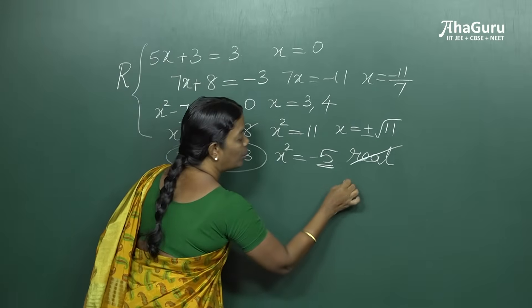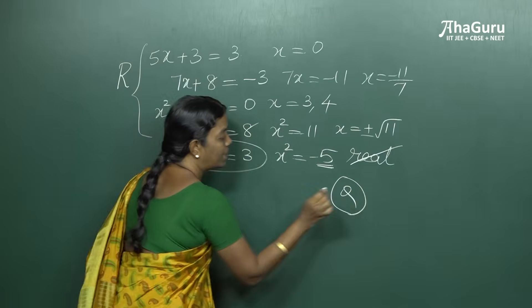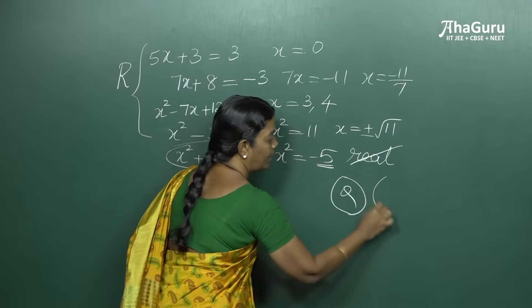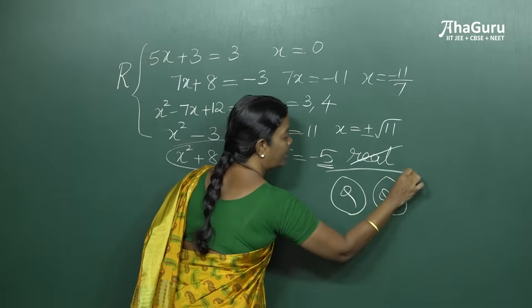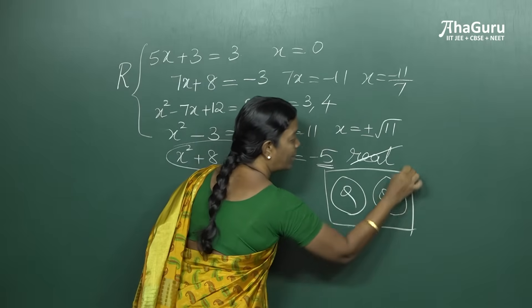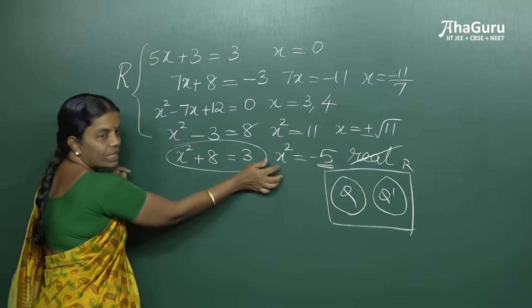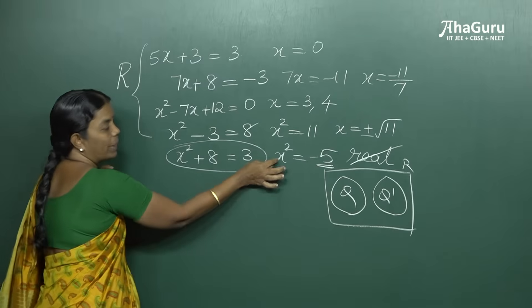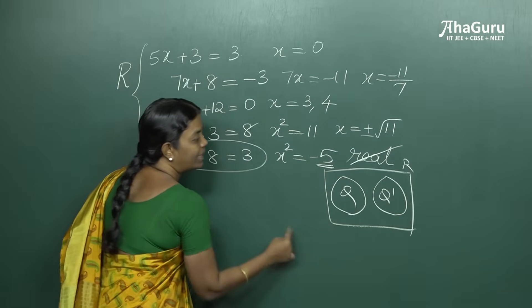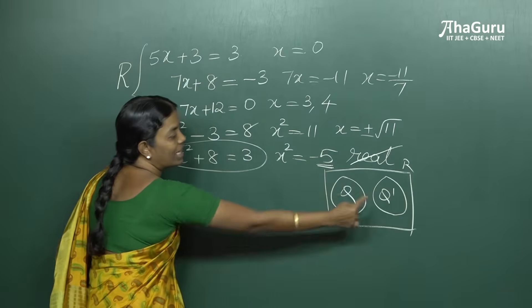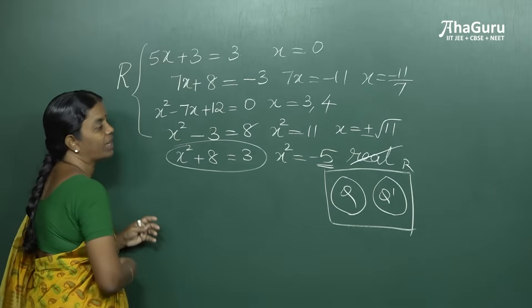The set of rational numbers and irrational numbers together form the set of real numbers. Now the solution for this equation — where the square is negative — does not fit into either rational or irrational numbers; it does not fit into the set of real numbers.